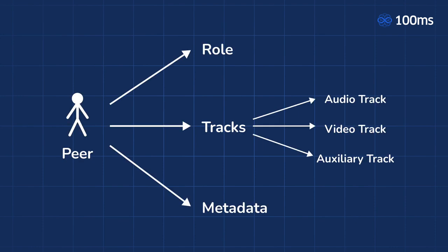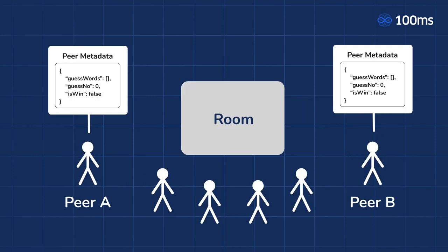Next is tracks. A track is media that the peer can publish to the room. There are three kinds of tracks: first is an audio track, then a video track, and then an auxiliary track. The audio track originates from the microphone, the video track originates from the camera, and the auxiliary track can be anything — but in most cases it's the screen share. Next up is metadata. Peer metadata is a persistent state that the peer can set and update at any time, and it's available to everyone inside the room.